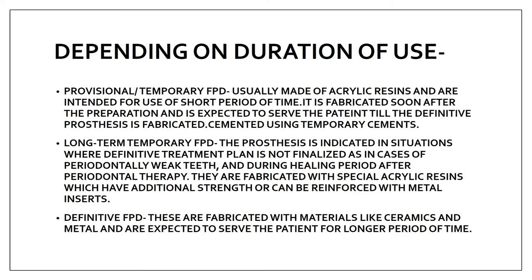The next is depending on the duration of use — it can be provisional, long-term temporary, or definitive. Provisional or temporary FPD is used for a short period of time, usually made of acrylic resin, fabricated soon after preparation, and cemented using temporary cement. It serves the patient until the definitive prosthesis is fabricated, protecting the prepared tooth from damage.